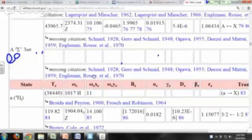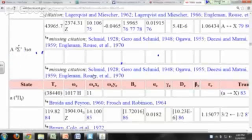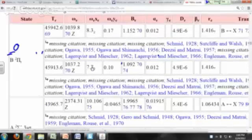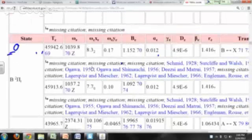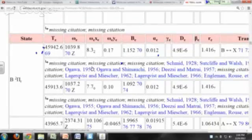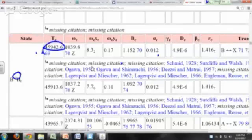The first excited doublet state right here, doublet sigma plus, that's the capital A state. So going further up, the B state has a TE of 45,942 reciprocal centimeters, that's a doublet state, it's a doublet pi state.